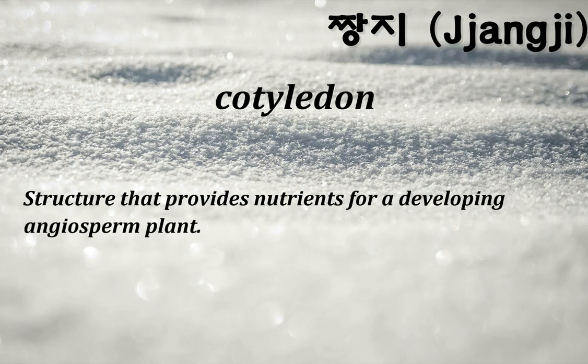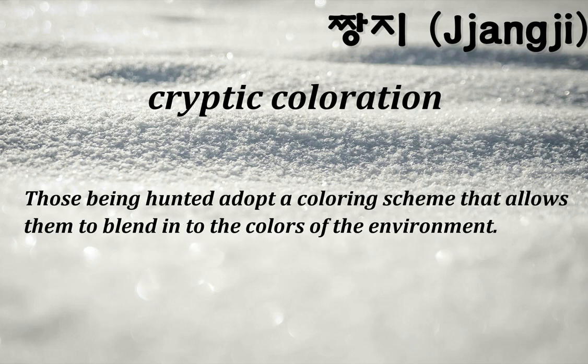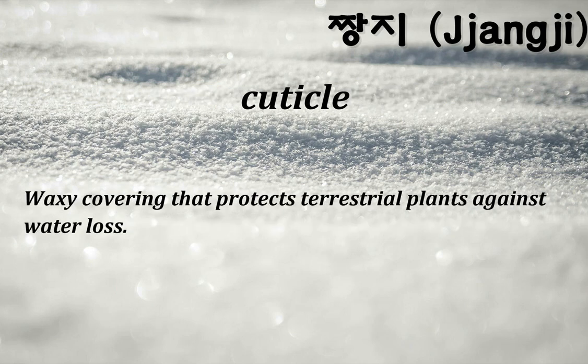Cotyledon: structure that provides nutrients for a developing angiosperm plant. Cri-du-chat syndrome: this syndrome occurs with a deletion in chromosome 5 that leads to mental retardation, unusual facial features, and a small head; most die in infancy or early childhood. Cryptic coloration: those being hunted adopt a coloring scheme that allows them to blend into the colors of the environment. Cuticle: a waxy covering that protects terrestrial plants against water loss.